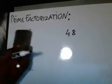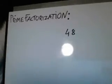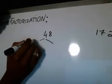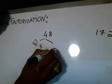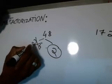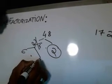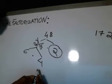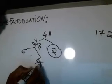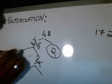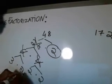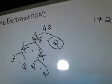So this is the prime factorization of 36. Let's try it with 48. Same thing — what goes into 48? 48 is 24 times 2. Can you break down the 2? No, so you circle it. Can you break down the 24? Yes, so you cross it out and break it down. 24 is 6 times 4. Can you break down the 4? Yes. Can you break down the 6? Yes. 4 is 2 times 2. 6 is 3 times 2.